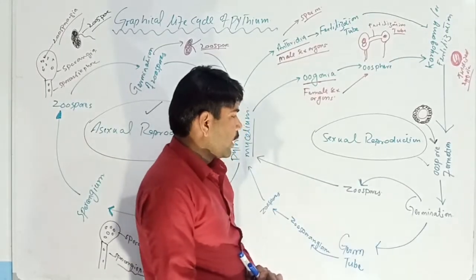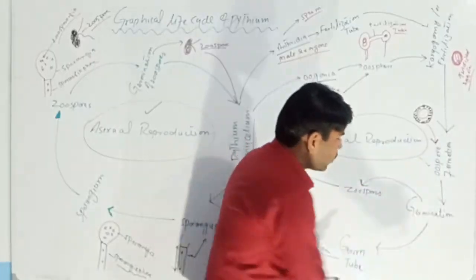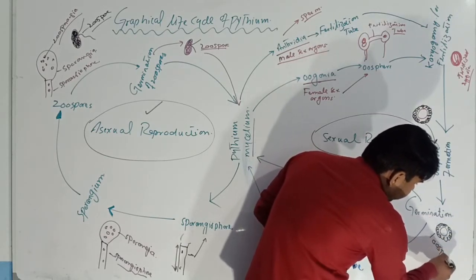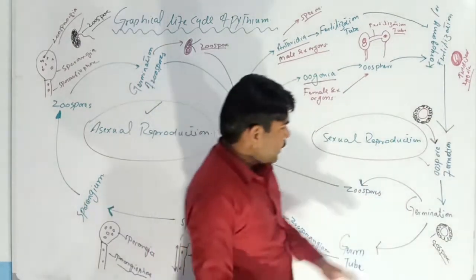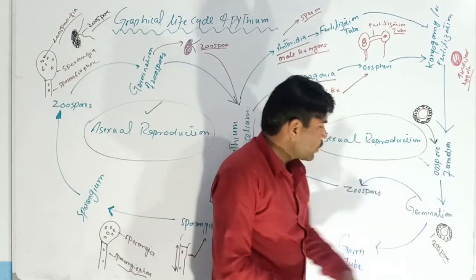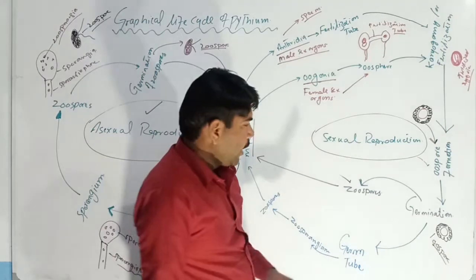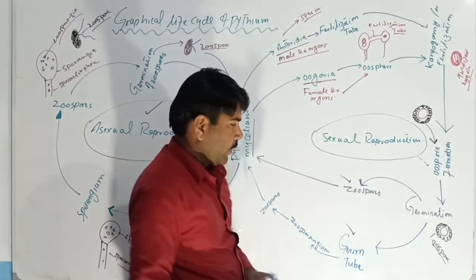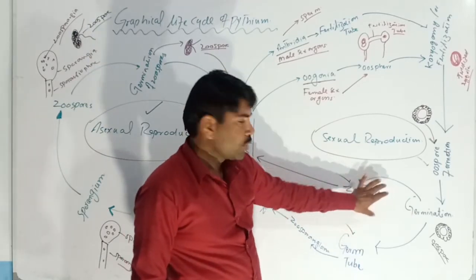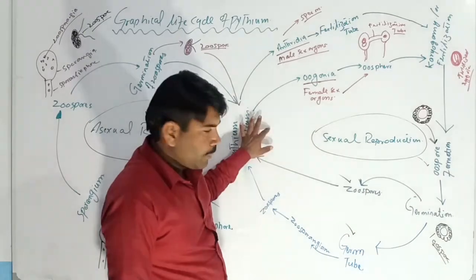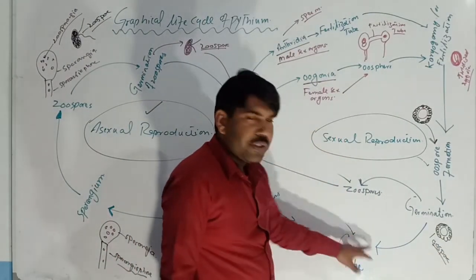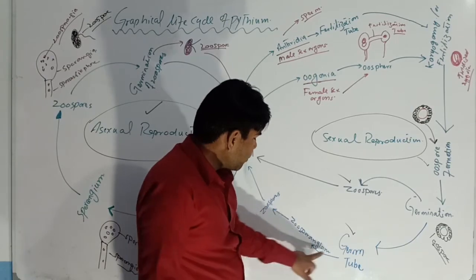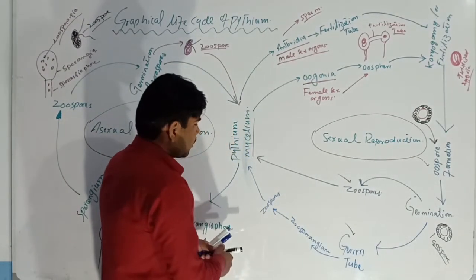When the thick wall is secreted around it, it is now known as an oospore. After the formation of the oospore, there are two conditions: either germination of this oospore makes a zoospore, or the germination of the oospore makes a germ tube. If zoospores are produced, these zoospores germinate and produce a new Pythium mycelium. If the zoospores germinate to form a germ tube, then this germ tube again makes a sporangiophore, and these zoospores again produce new zoospores, which will produce a new mycelium.